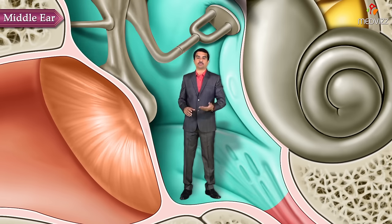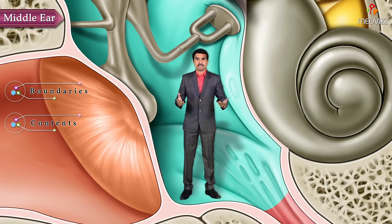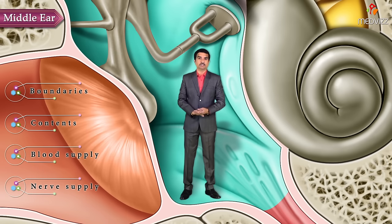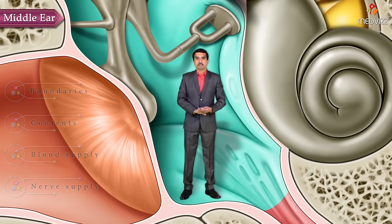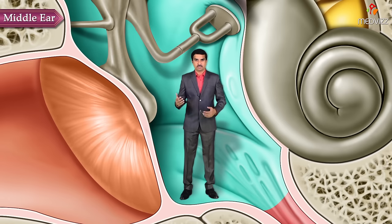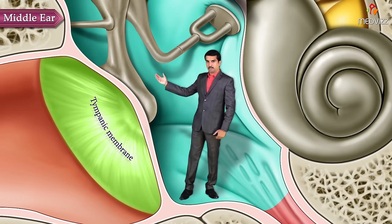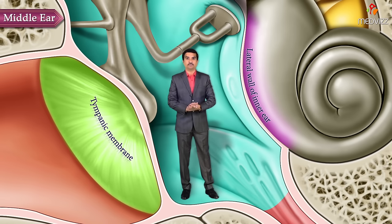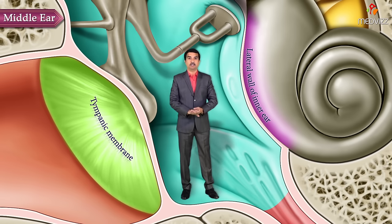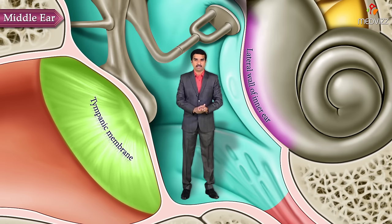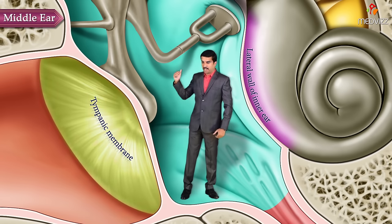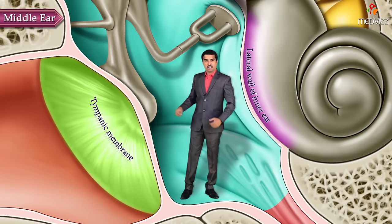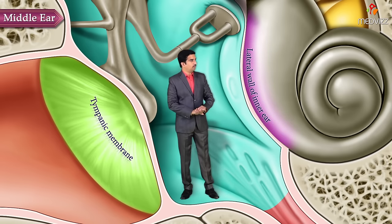This video is going to focus especially on the anatomical aspects of the middle ear, where we are going to discuss their boundaries, contents, as well as the blood supply and nerve supply of the middle ear. The middle ear extends from the tympanic membrane laterally to the lateral wall of the inner ear medially.